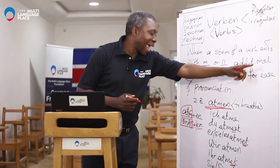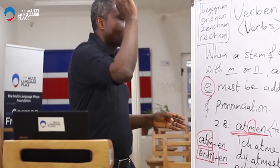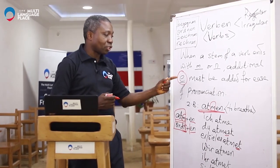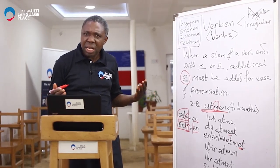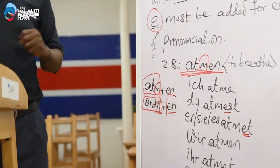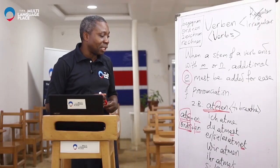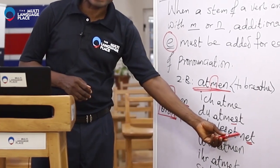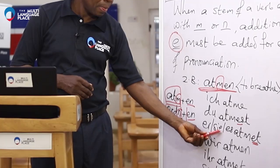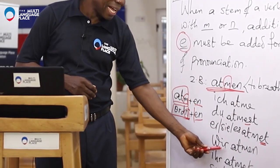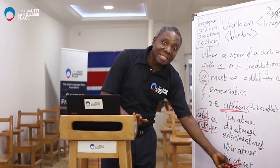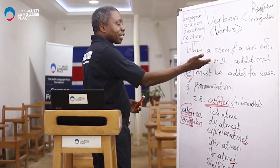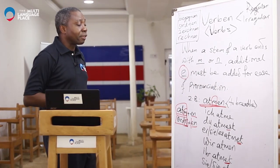When a stem of a verb ends with M, like in 'atmen,' or with N like in 'ordnen,' an additional E must be added. That E is functioning there just to make the pronunciation easy. We're going to read this together and you repeat after me. So with that knowledge of M and N, we are able to conjugate correctly the verb 'atmen.'